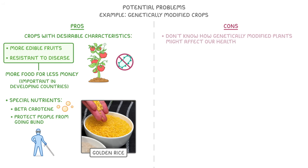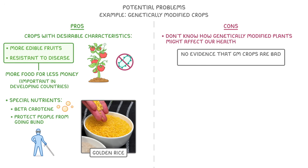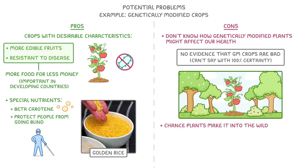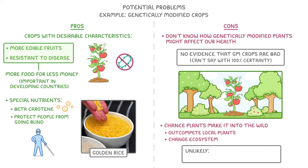One of the main issues, though, is that we don't know for certain how genetically modified plants might affect our health. There is currently no evidence that GM crops are bad for us, but we just can't say with 100% certainty yet. There is also the chance that plants could make their way into the wild, where they might outcompete local plants and change the whole ecosystem. This concern is pretty unlikely, though, as the plants have been specifically modified to survive in a farmer's field, not to survive in the wild.